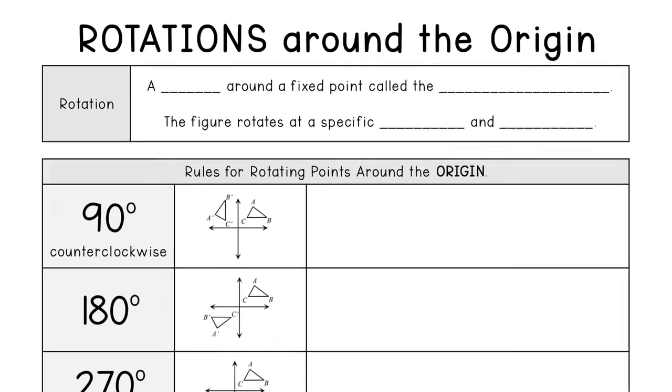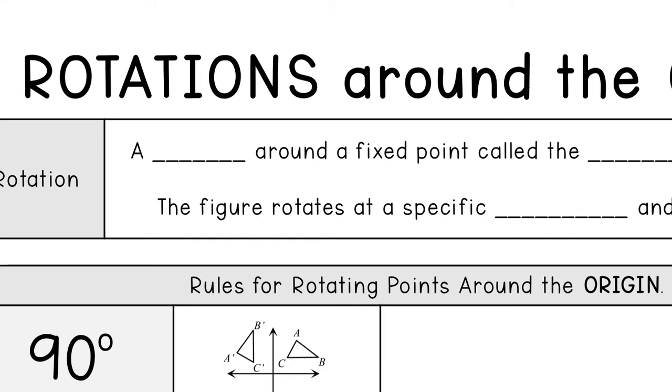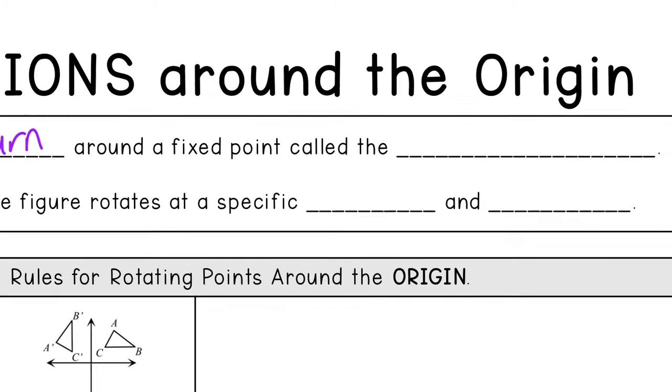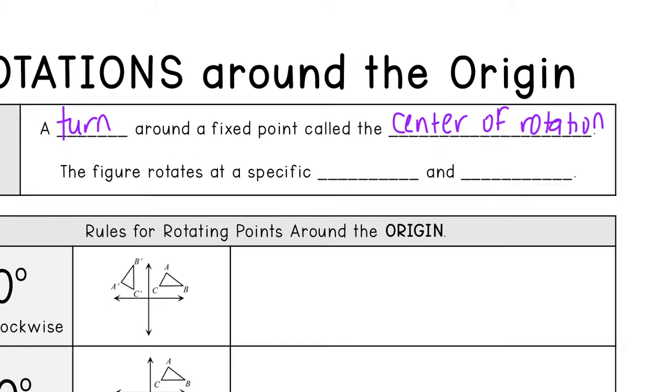So let's start with a definition. A rotation is a turn around a fixed point called the center of rotation. So they always have to tell you where the center is going to be.